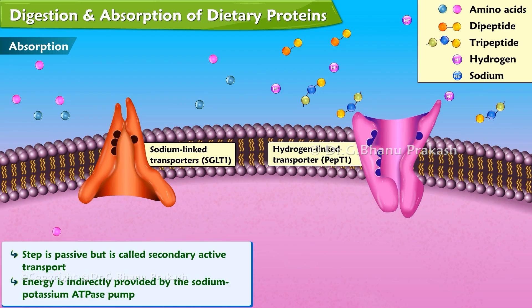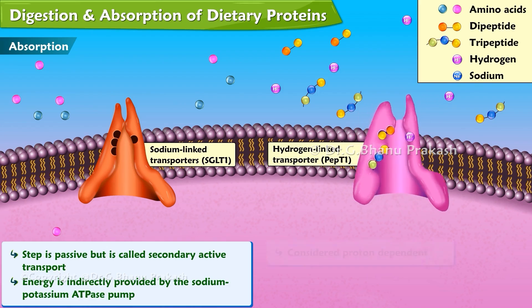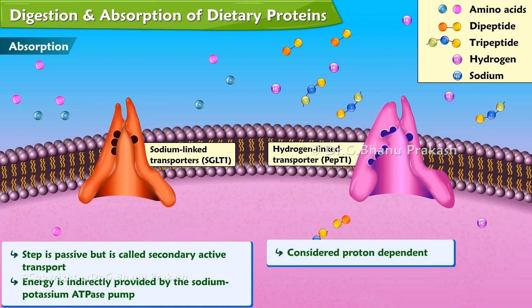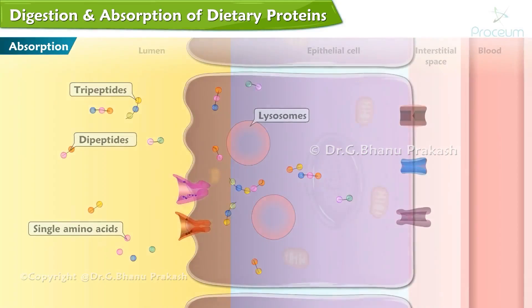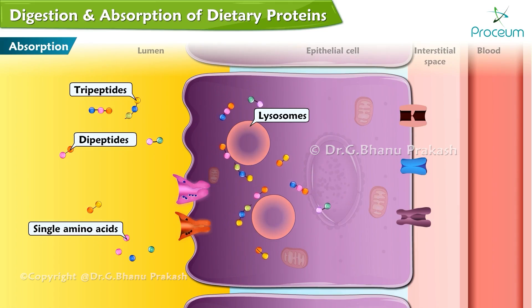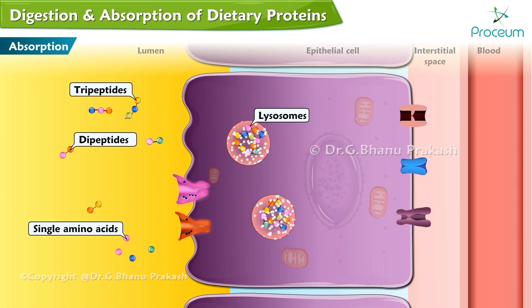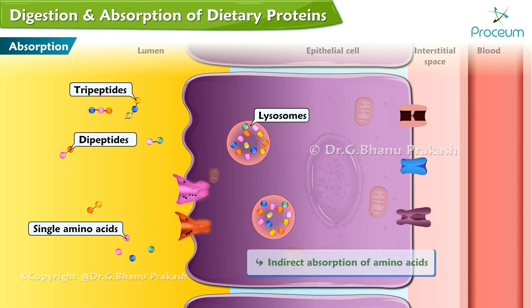Pepti-1, however, only absorbs dipeptides and tripeptides, along with one hydrogen ion, and is considered proton-dependent. Inside the enterocyte, these dipeptides and tripeptides are shuttled to lysosomes, where they are further digested to single amino acids. This is considered indirect absorption of amino acids because larger peptides were originally absorbed.